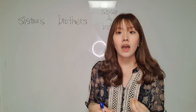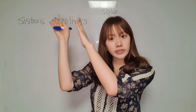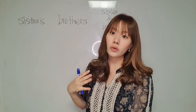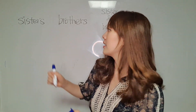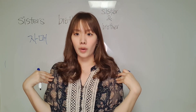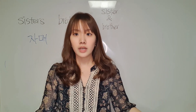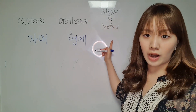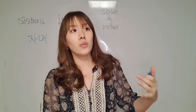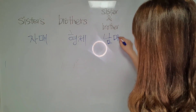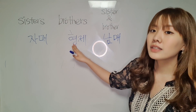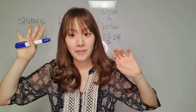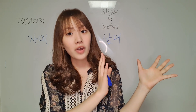Now, how we call the relationship with siblings. If you have only sisters — older sister and younger sister — the relationship is called 자매. If you're brothers only, the relationship is 형제. If there's a sister and a brother together, the relationship is 남매. So: sisters = 자매, brothers = 형제, sister and brother = 남매.